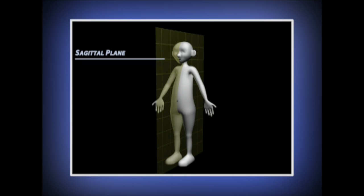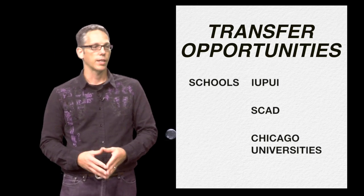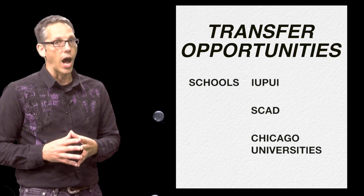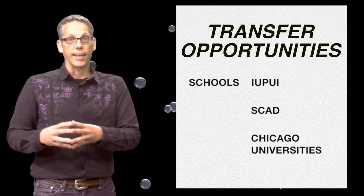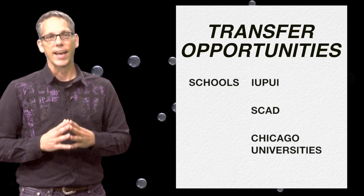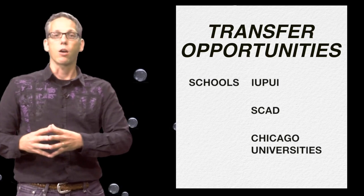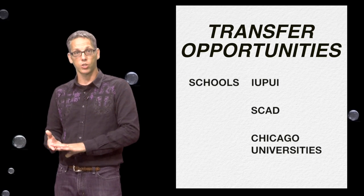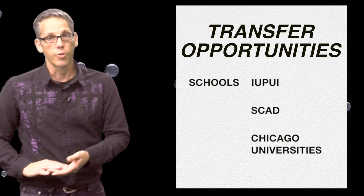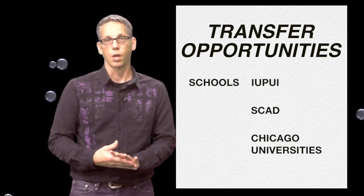Once you've finished all our classes, the next step is to move on to another school where you can earn your bachelor's degree. We have a fantastic relationship with a school in Indiana called IUPUI — Indiana University Purdue University at Indianapolis. They accept our credits pretty much straight in. Other students have gone on to Savannah College of Art and Design, SCAD in Atlanta. Other students have gone up to Chicago, to DePaul.